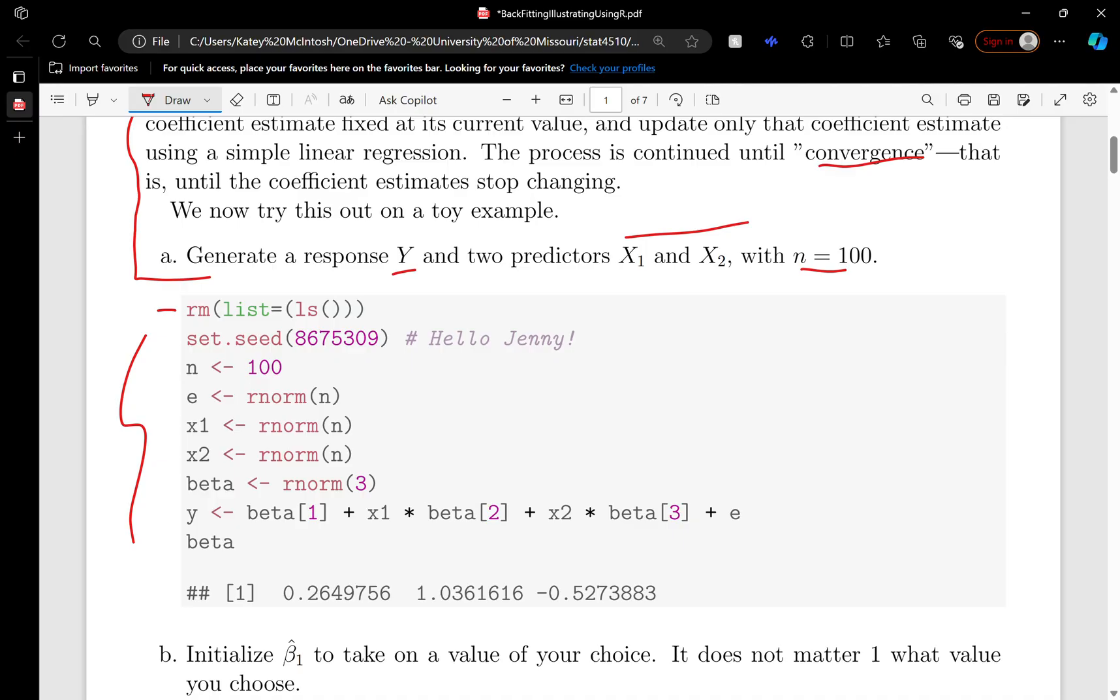First, I remove all the objects in R, and then I set the seed 8675309 so this is reproducible. We have 100 data points, this is the error in our linear model, these are the two predictors, this is the unknown beta parameter—beta 0, beta 1, and beta 2—and then this creates the Y vector. So in a sense, our dataset has Y and two X's, three variables, and we want to regress Y onto X1 and X2.